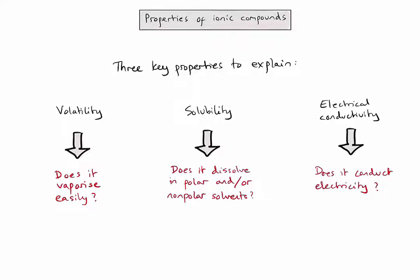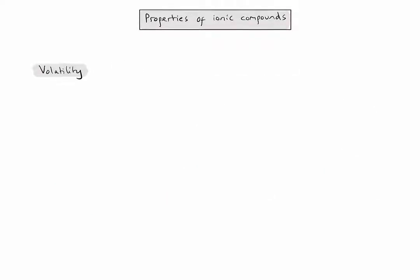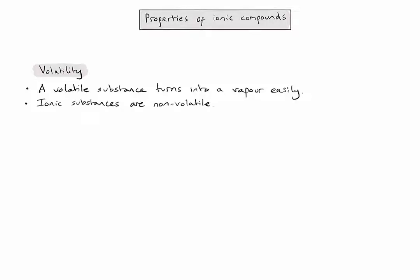Let's start with volatility. A volatile substance is one that turns into a vapor easily. Ionic substances are considered non-volatile, meaning they do not turn into a vapor easily, and to explain why we need to consider the structure of an ionic substance, as shown in the diagram.